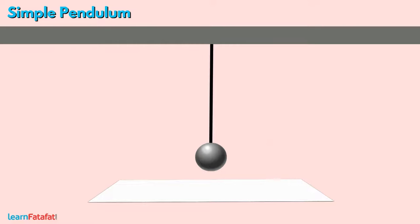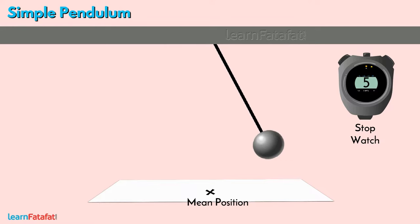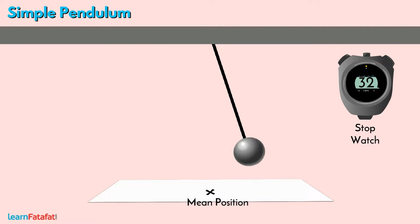Mark the mean position of the bob on the floor. Switch off the fans. Take a clock to measure time, preferably a stopwatch. Keeping the string taut, bring the bob to one side. Now release the bob and at the same time start the stopwatch. Go on counting the oscillations. Stop the stopwatch as soon as the pendulum completes the 20th oscillation.